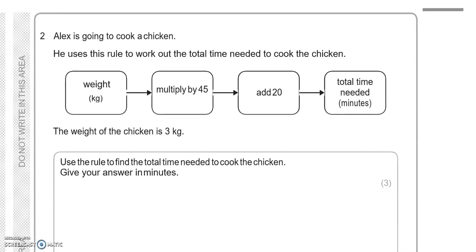Alex is going to cook a chicken. He uses this rule to work out the total time needed to cook the chicken. We've got weight in kilograms, multiply it by 45, add 20 and it gives us the total time needed in minutes. The weight of the chicken is 3 kilograms. Use the rule to find the total time needed to cook the chicken. Give your answer in minutes.